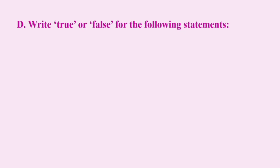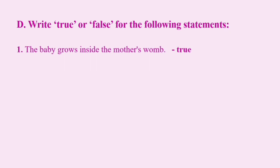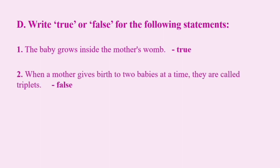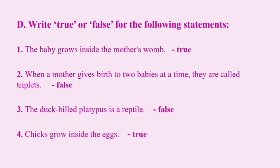Question D: Write true or false for the following statements. Number 1: The baby grows inside the mother's womb. True. Number 2: When a mother gives birth to two babies at a time, they are called triplets. False — when a mother gives birth to two babies at a time, they are called twins, not triplets. Number 3: The duck-billed platypus is a reptile. False. Number 4: Chicks grow inside the eggs. True.